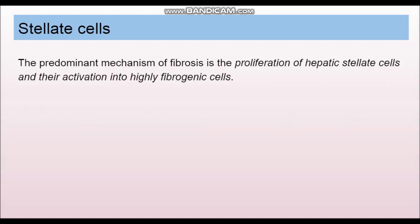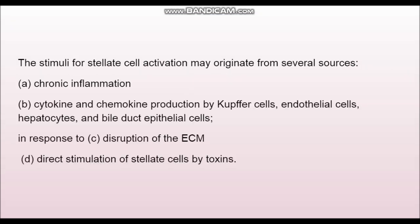Stellate cells are particularly responsible for fibrosis. In chronic inflammation, these cells get activated — they proliferate and convert themselves into highly fibrogenic cells. Activation of stellate cells can occur due to chronic inflammation like hepatitis, Kupffer cells producing cytokines and chemokines, disruption of extracellular matrix, or direct stimulation by toxins such as alcohol or certain drugs.